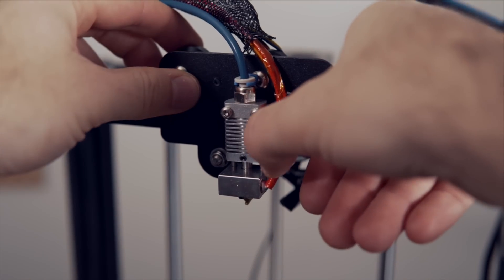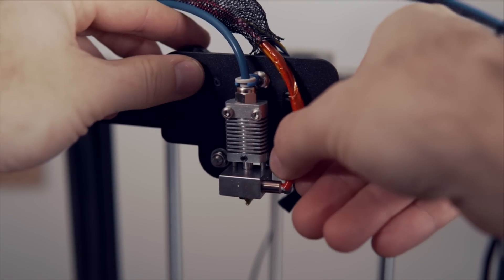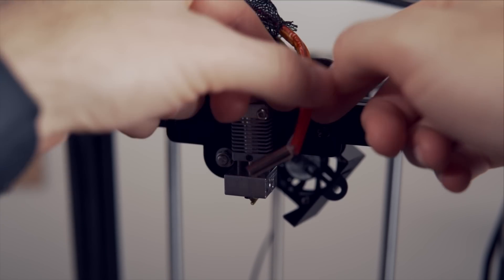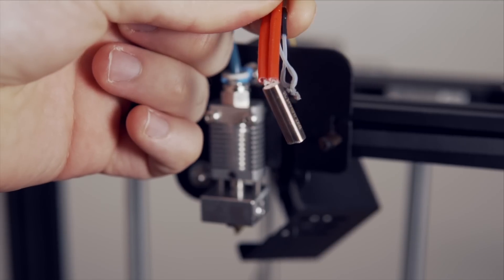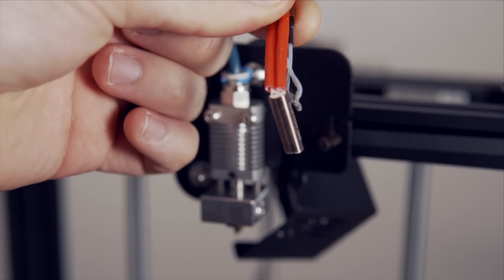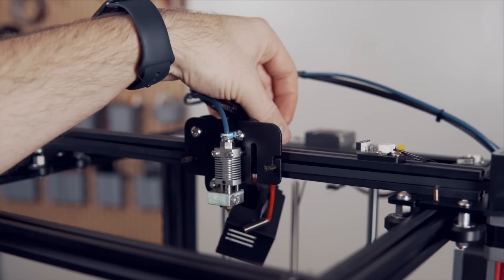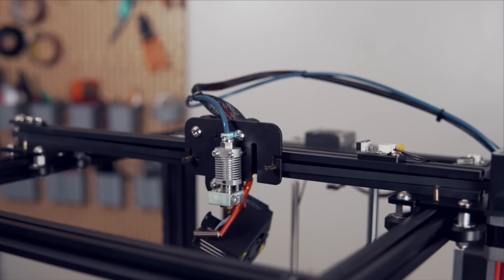With that out of the way, we should be able to grab the heater cartridge and slide out both the heater cartridge and the thermistor. Be very careful with the thermistor, it is quite fragile, and my recommendation is to take the heater cartridge and thermistor and just throw them over the back side of the X carriage for now, so that way they are out of the way.